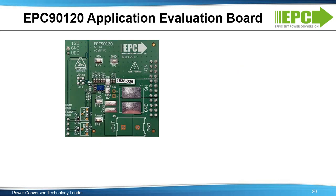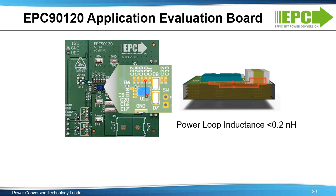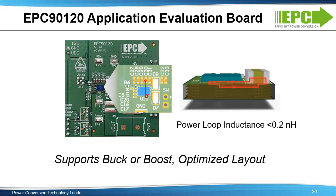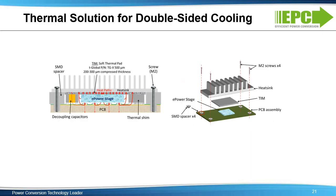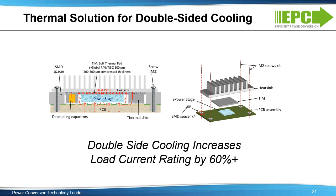The EPC-90120 development board is a good demonstration of what the EPC-2152 can do in an actual application circuit. In addition to learning about switching performance of the device, the PCB design also provides a reference layout to achieve maximum performance. The EPC-90120 has a power loop inductance of less than 0.2 nanohenries. The chip scale package is ideal for double-sided cooling — using a simple thermal design, the load current rating can increase by greater than 60%.